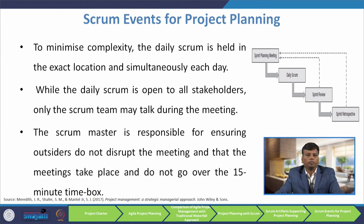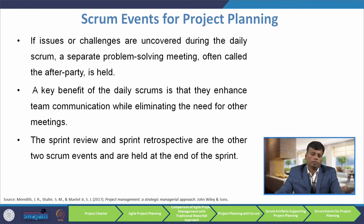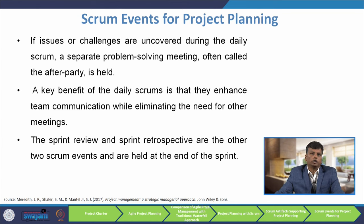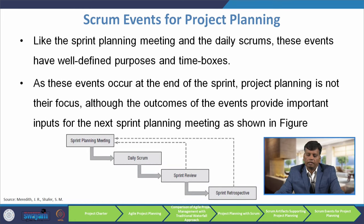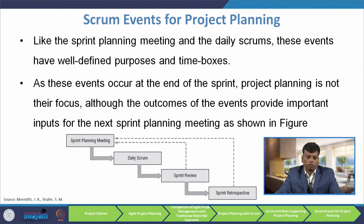If issues are uncovered during the daily scrum, a separate problem-solving meeting often called the 'after party' is held. A key benefit of the daily scrum is that it enhances team communication while eliminating the need for other meetings. The sprint review and sprint retrospective are the other 2 scrum events held at the end of the sprint. Although project planning is not their main focus, the outcomes provide important inputs for the next sprint planning meeting, with feedback flowing from sprint planning to daily scrum to sprint review to sprint retrospective.